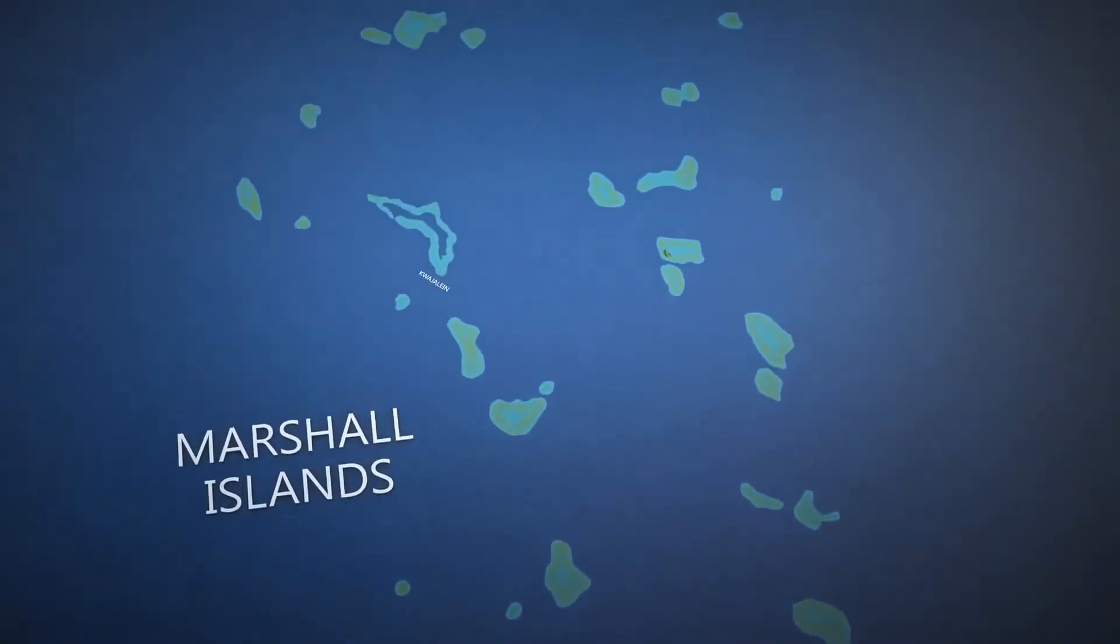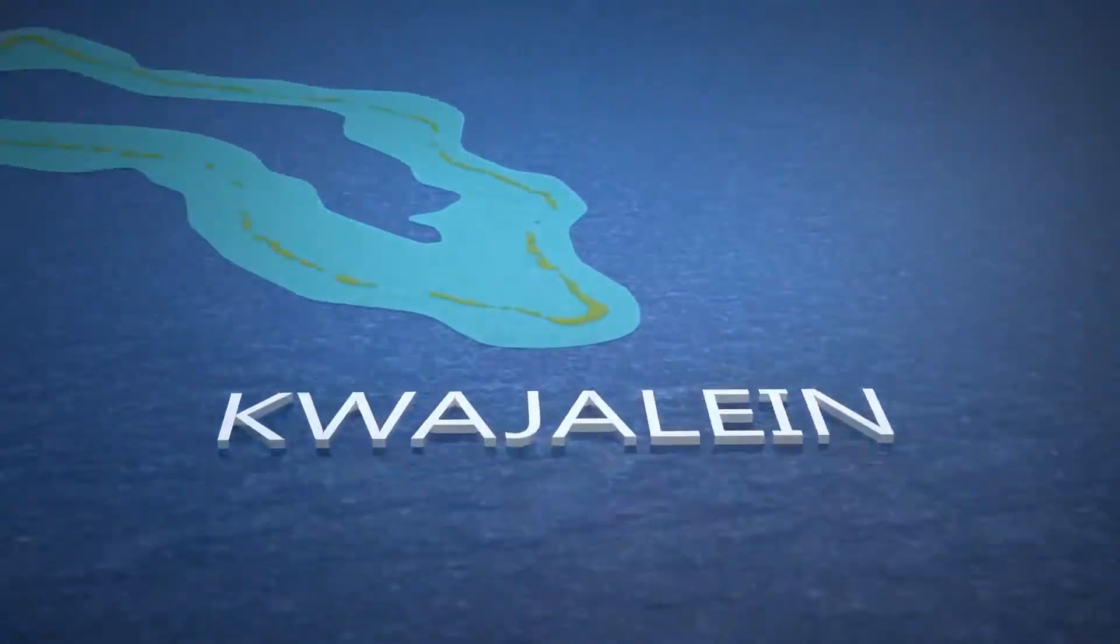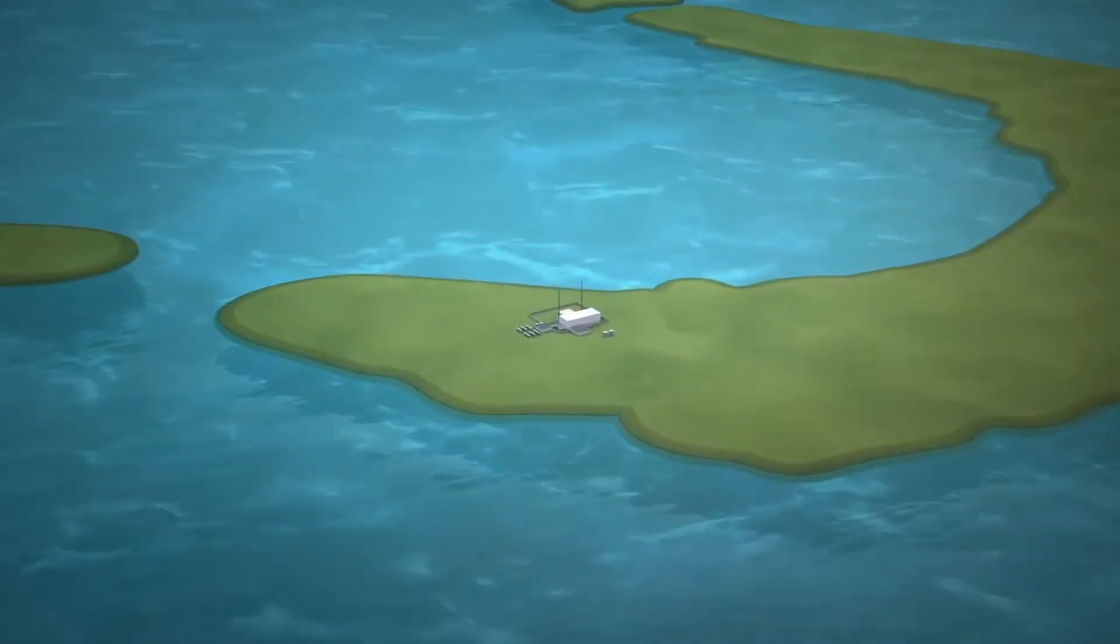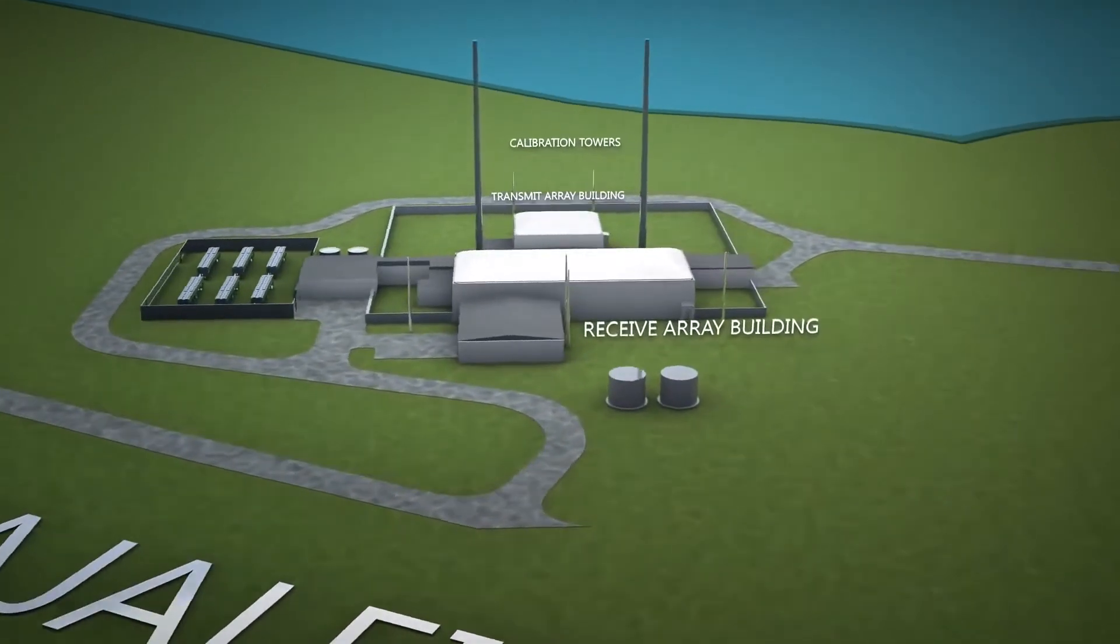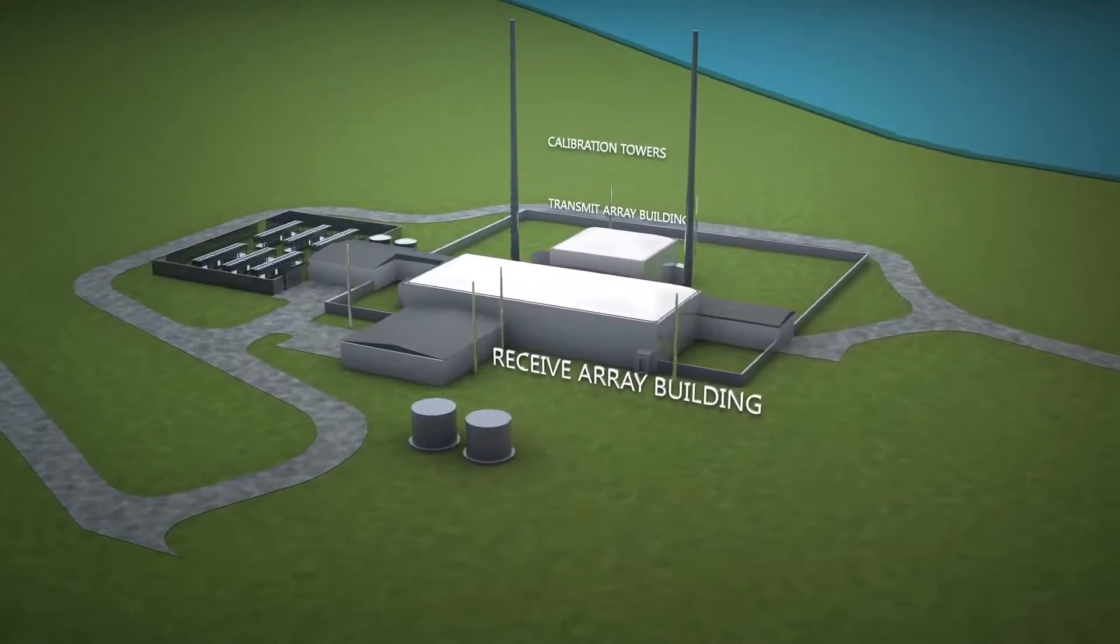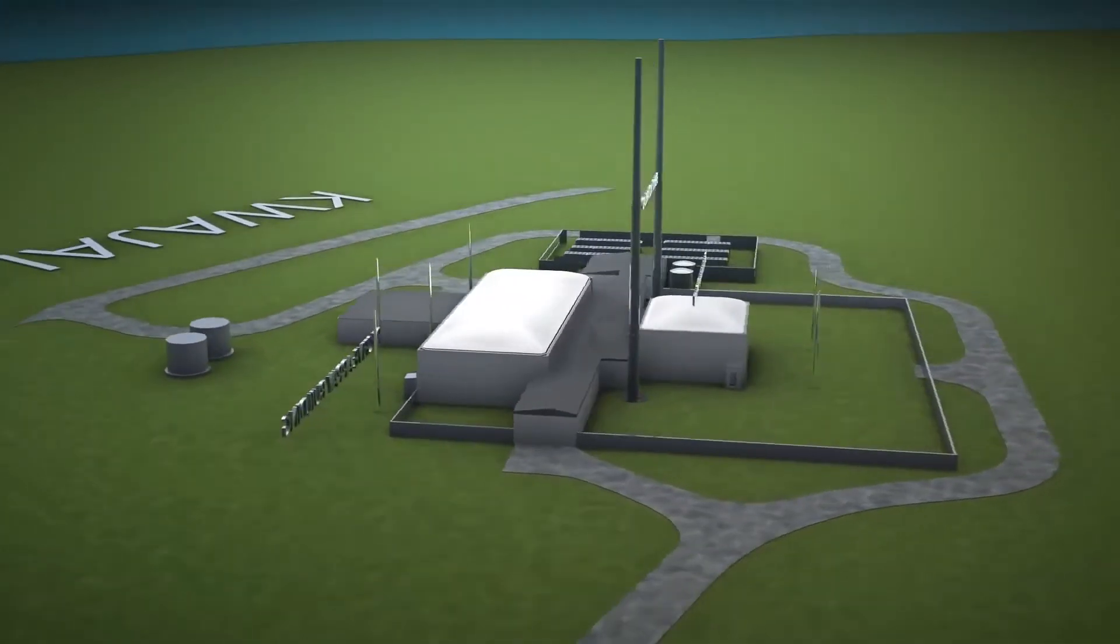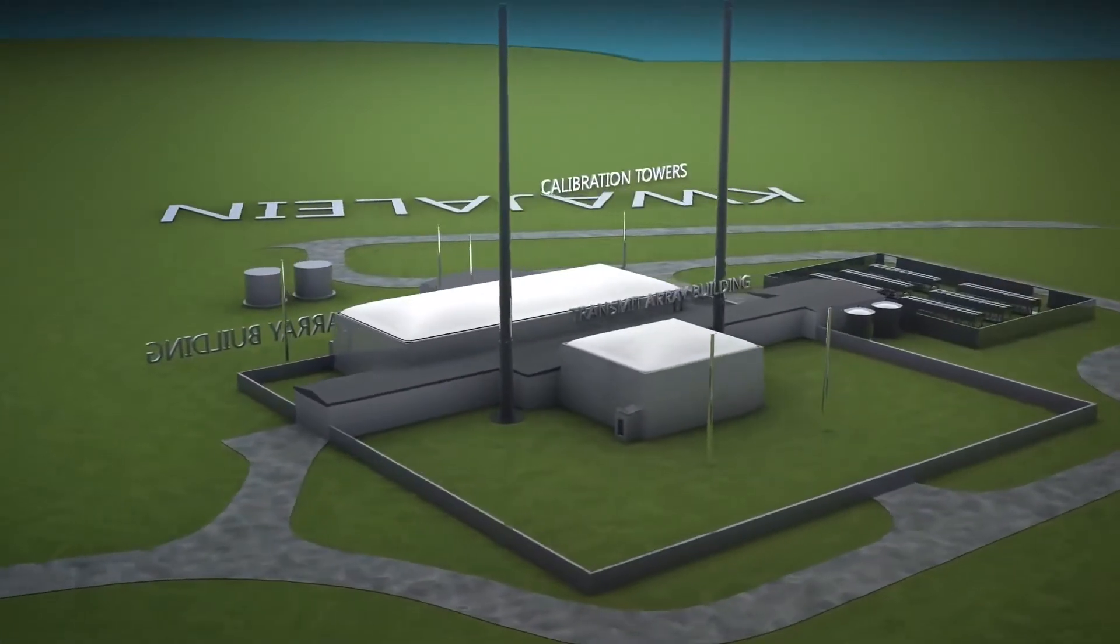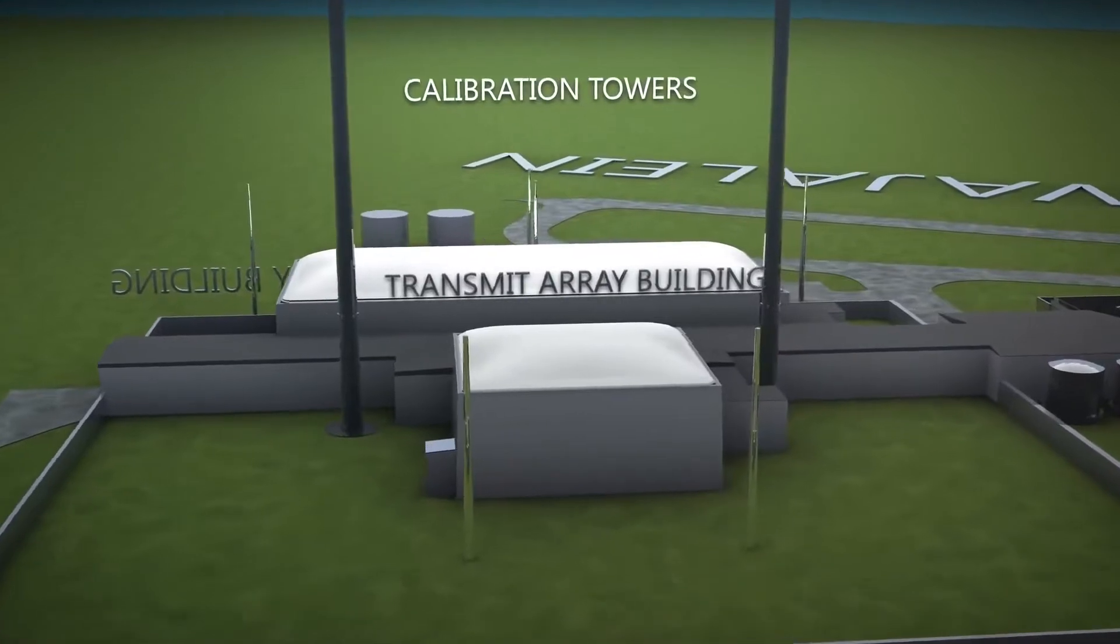The Space Fence system includes up to two minimally manned radar sites, mission processing, and the system operations functionality. Each radar site features a design boasting closely spaced but separate transmit and receive arrays that are mission-optimized for high availability and low lifetime support costs, including prime power. The dual aperture configuration offers efficiency and affordability.